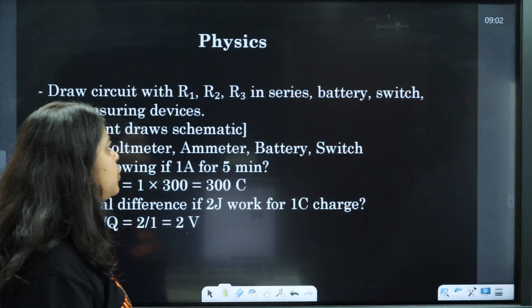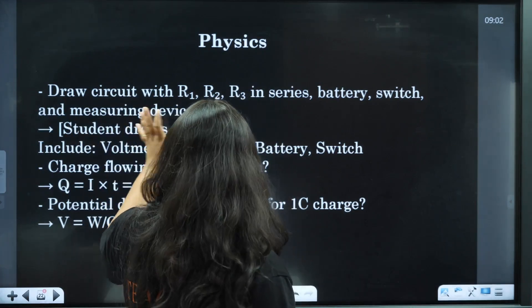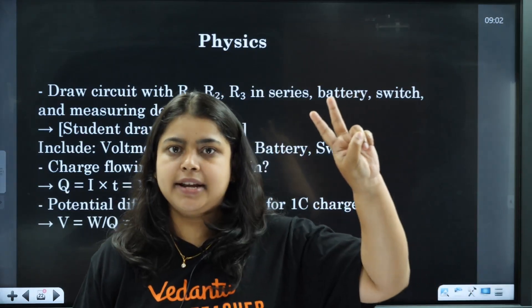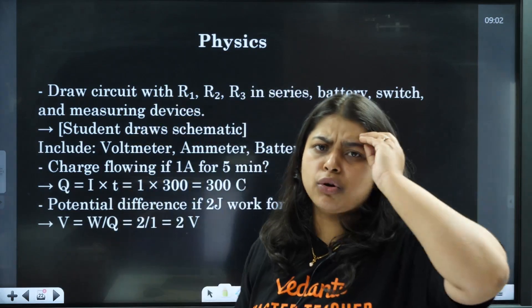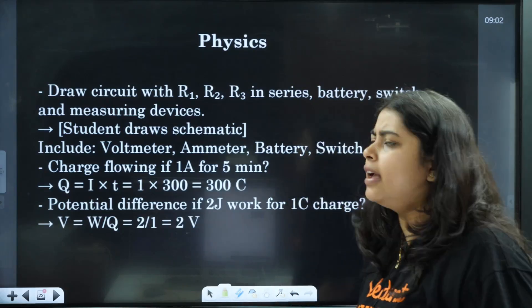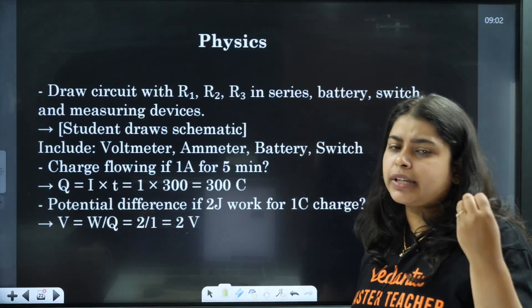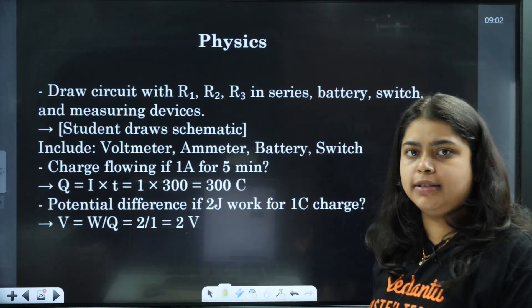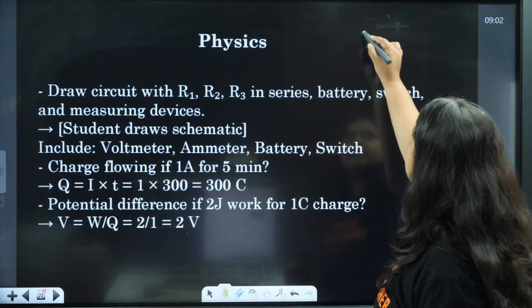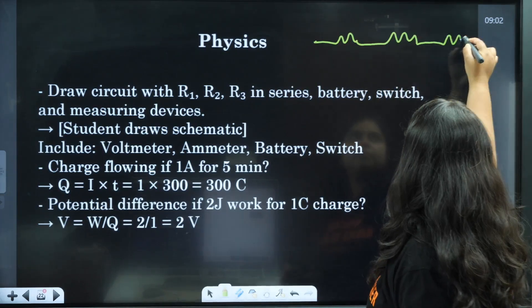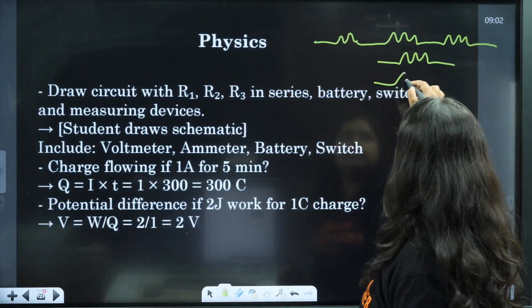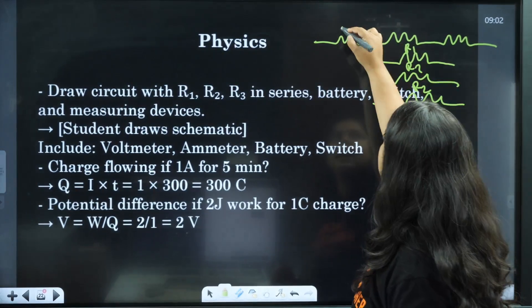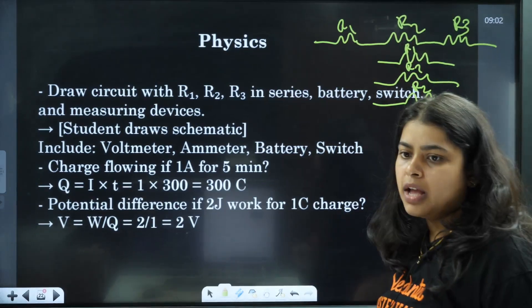Next, draw a circuit of R1, R2, and R3 in series. Battery, switch, and measuring device need to be included. Series and parallel series — this question has been repeated almost 3 to 4 times in papers. In series: R1, R2, R3 are connected end to end. In parallel: R1, R2, R3 are connected side by side.